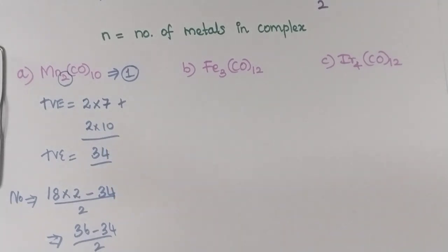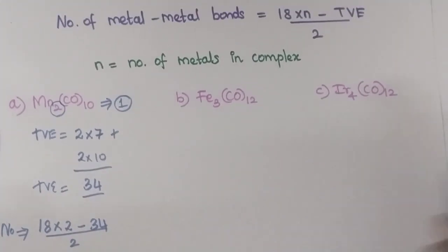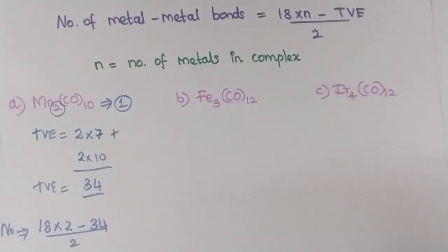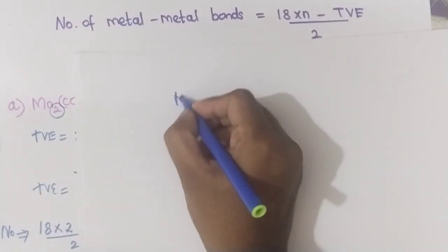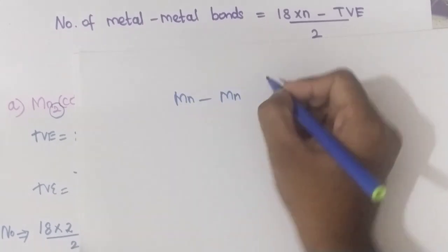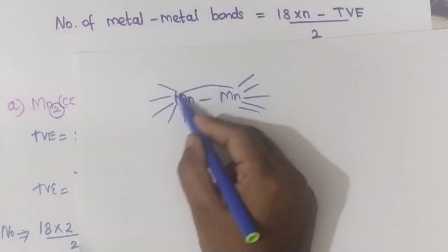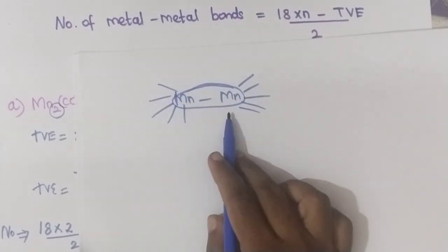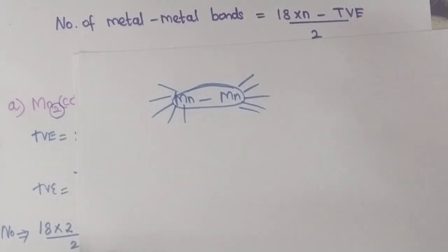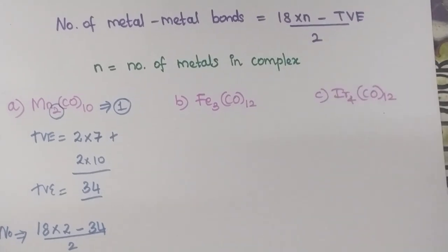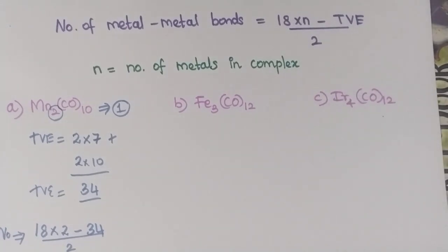Only 1 metal-metal bond is present in Mn₂CO₁₀. This is how you find out the number of metal-metal bonds in a given complex. You very well know the structure of Mn₂CO₁₀ — each Mn will have 5 carbonyls, and only 1 metal-metal bond connects them. You can verify the metal-metal bond from the given complex itself, and this formula is really helpful.